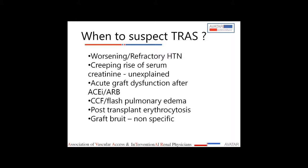The main indicators of transplant renal artery stenosis are: worsening refractory hypertension especially starting three months after transplant (the most common period is 3 to 24 months post-transplant); a creeping rise in serum creatinine not explained by other factors; acute graft dysfunction especially after introducing ACE inhibitors or ARBs, or after aggressive blood pressure lowering; recurrent episodes of congestive cardiac failure or flash pulmonary edema; and post-transplant erythrocytosis. Graft bruit is significant only if of recent onset.